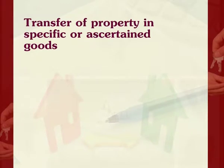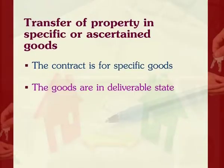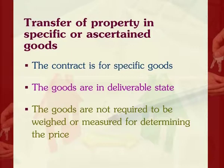First: transfer of property in specific or ascertained goods. Second: transfer of property in generic or unascertained goods. Third: transfer of property in goods sent on approval or on sale or return basis. When there is a contract for the sale of specific or ascertained goods, the property in them is transferred to the buyer when the parties intend to pass it, subject to certain conditions. For example, A sold to B 100 bales of cotton kept in his godown. Before the bales could be identified and separated, all the bales got destroyed by fire — thus, the seller is liable for damages.